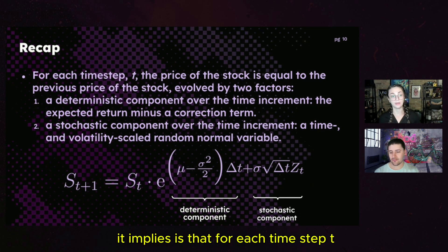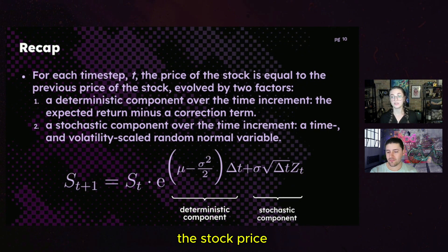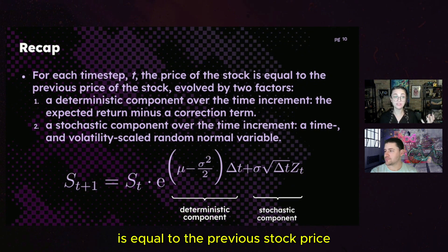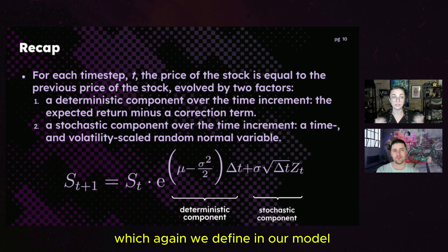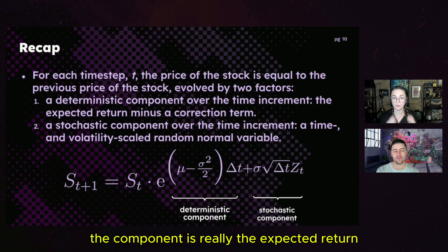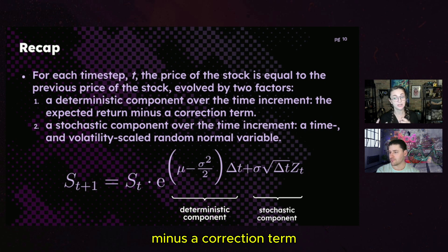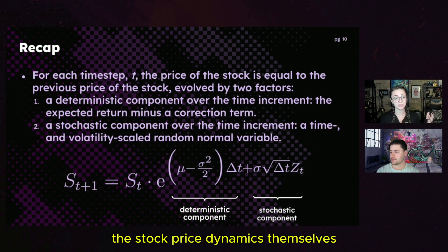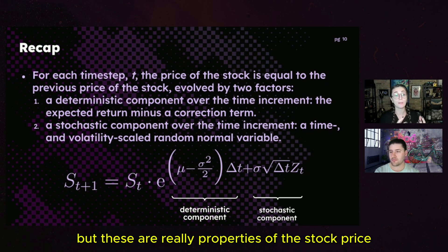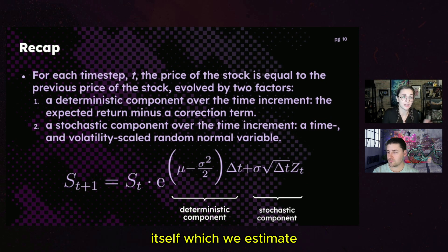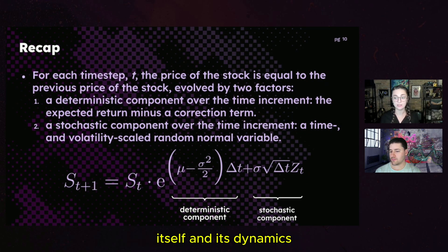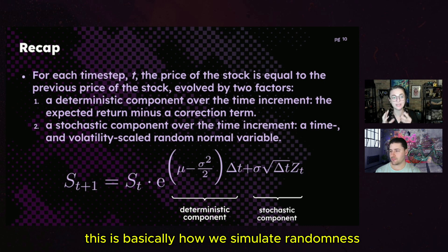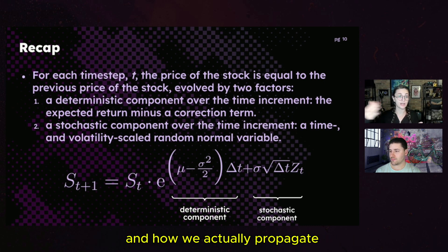For each time step t, the stock price is equal to the previous stock price evolved by two different factors: a deterministic component over some time increment, which is the expected return minus a correction term in the exponential. These are factors defined by the stock price dynamics themselves — really properties of the stock price that we estimate with historical data.